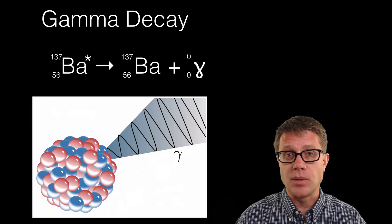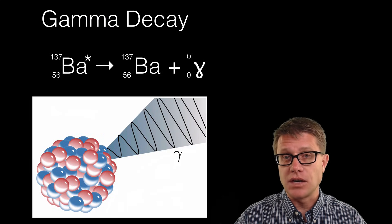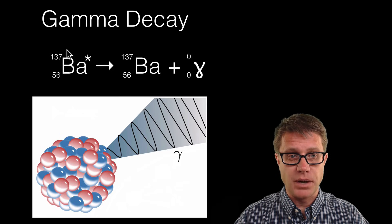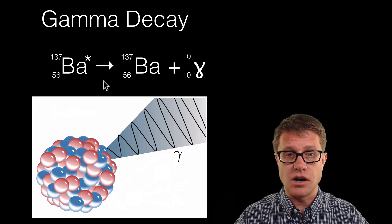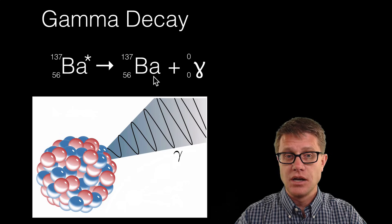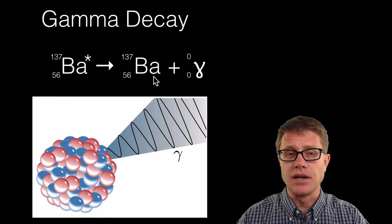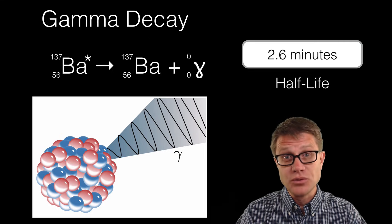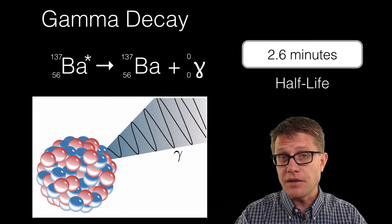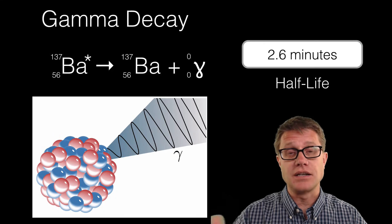And then we could look at gamma decay. Remember, in gamma decay we are just giving off these gamma rays. We are going from barium-137 that is charged to barium-137 that is not charged. And so we are conserving charge and conserving mass. What is the half-life? 2.6 minutes. So it is really, really short. And so half-life is going to change depending on that decay constant.